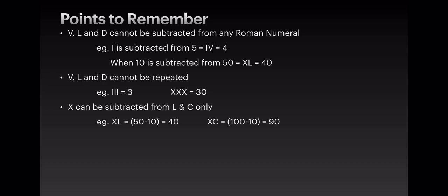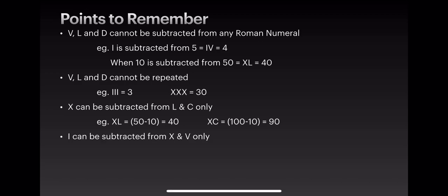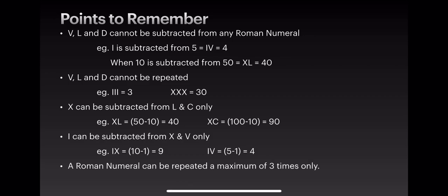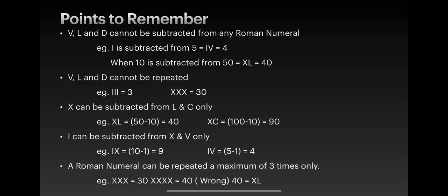XC means 100 minus 10, which is 90. I can be subtracted from X and V only. For example, IX is 10 minus 1 which is 9, and IV is 5 minus 1 which is 4.